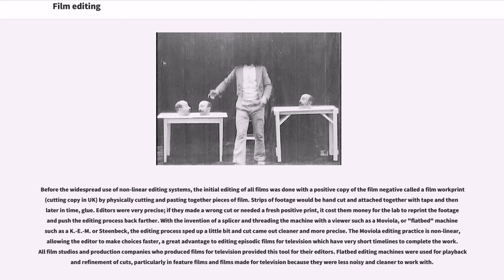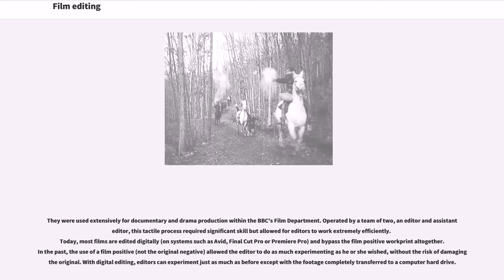The Moviola editing practice is non-linear, allowing the editor to make choices faster, a great advantage to editing episodic films for television which have very short timelines to complete the work. All film studios and production companies who produced films for television provided this tool for their editors. Flatbed editing machines were used for playback and refinement of cuts, particularly in feature films and films made for television because they were less noisy and cleaner to work with. They were used extensively for documentary and drama production within the BBC's film department. Operated by a team of two — an editor and assistant editor — this tactile process required significant skill but allowed for editors to work extremely efficiently.